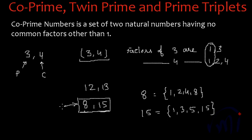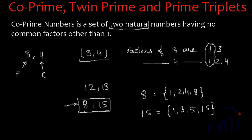So now you understand what co-prime numbers are. Co-prime numbers is a set of two natural numbers having no common factors other than 1. Those two numbers can individually be either prime numbers or composite numbers, but between themselves they don't have any common factor other than 1, so they are called co-prime numbers.